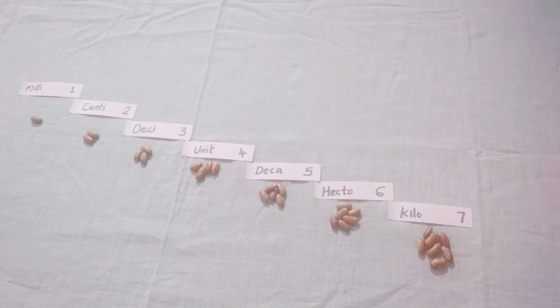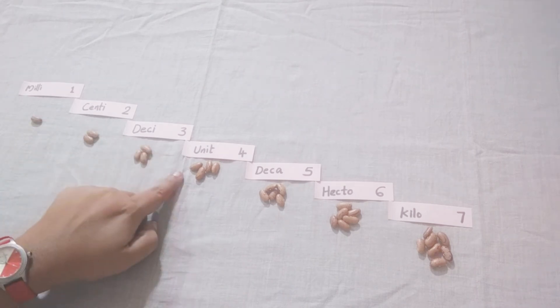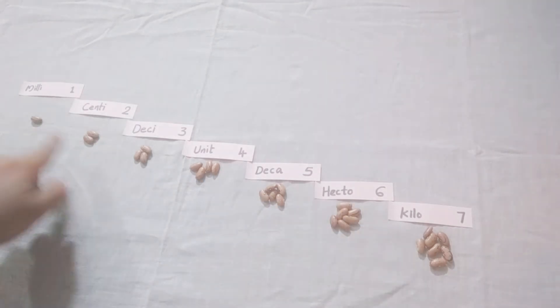For this activity, you will need one material that can be anything - some peas, some nuts, or some buttons. As you can see here, I have arranged the units milli, centi, deci, unit, deca, hecto, kilo in order. And I have numbered them also.